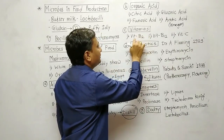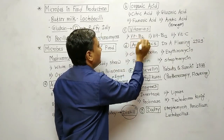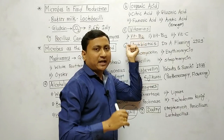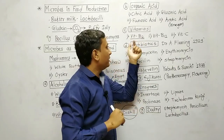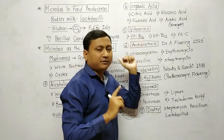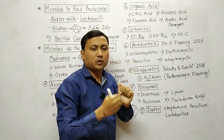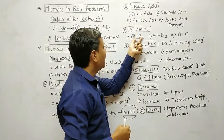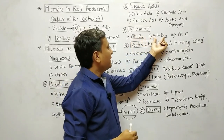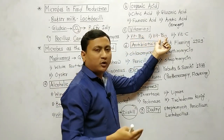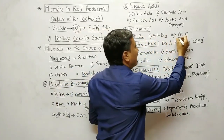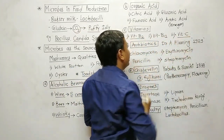Next is vitamins. Vitamin B2 is produced using two different microorganisms: first Neurospora gossypii, and second Eremothecium ashbyi. Vitamin B12 is produced by Pseudomonas denitrificans. Vitamin C is produced using Aspergillus niger.